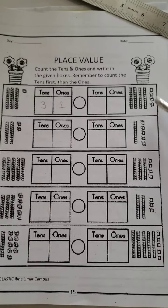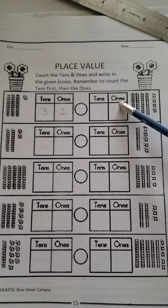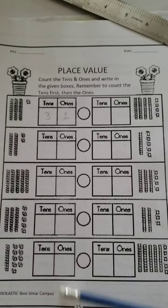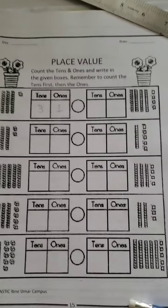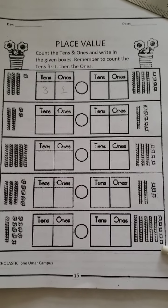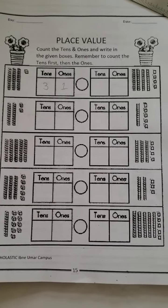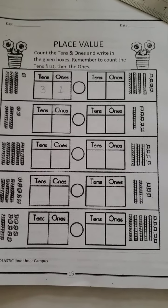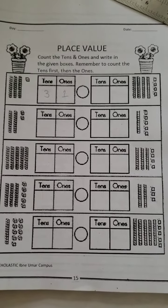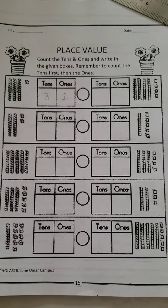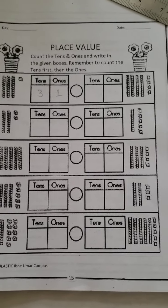Then you will do this one. How many tens can you see? One, two, three, four. And you will write down here four. Four tens. You will not write 40 here, you will just write four. And how many units or ones can you see? Four units, very good. So then you will write it down here. That's how you are going to do this worksheet.